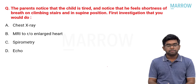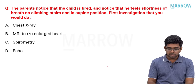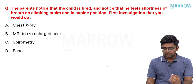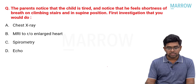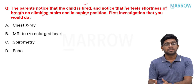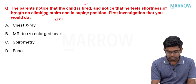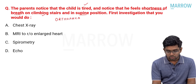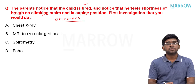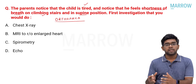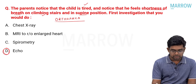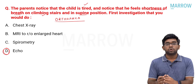Next question: the parents notice that the child is tired and notices shortness of breath on climbing stairs and also in the supine position. What is the first investigation you will do? This is a very classical history — the child has dyspnea on climbing stairs and in the supine position. This is nothing but classical features of orthopnea — a very classical feature of cardiac failure. If it is cardiac failure, the first investigation is echocardiography to document cardiac function.